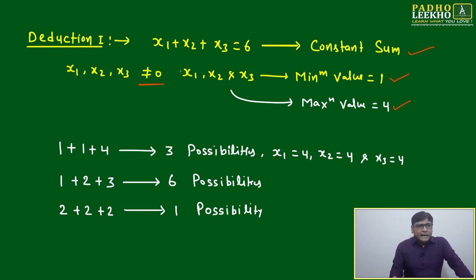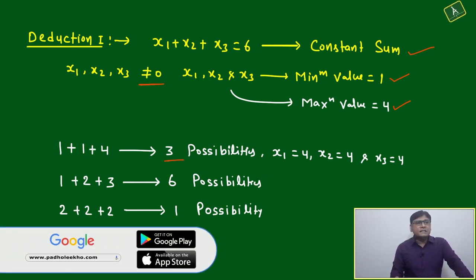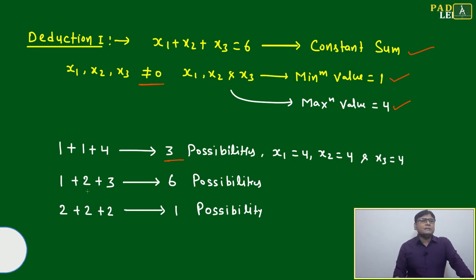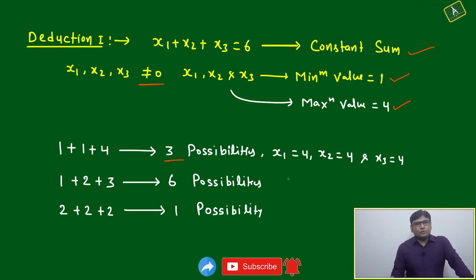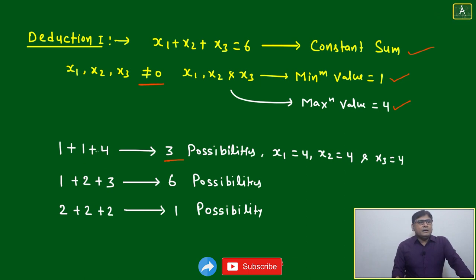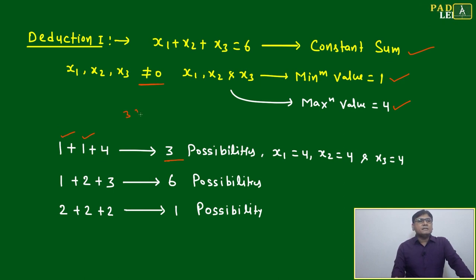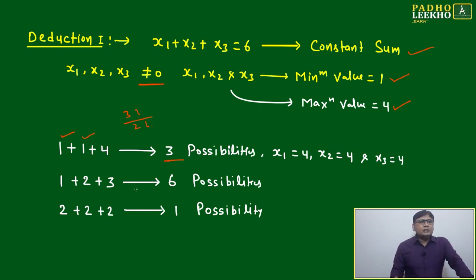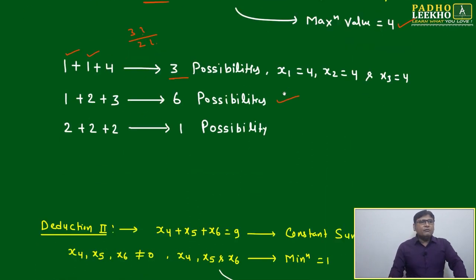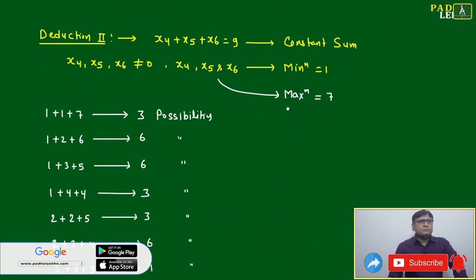For x1 + x2 + x3 = 6: the combination 1+1+4 gives 3 scenarios (since two values are the same, 3!/2! = 3). The combination 1+2+3 gives 6 scenarios (all different, 3! = 6). The combination 2+2+2 gives just 1 scenario. These are all possibilities for column one. Now for the second deduction: x4 + x5 + x6 = 9, with minimum value 1 and maximum value 7.